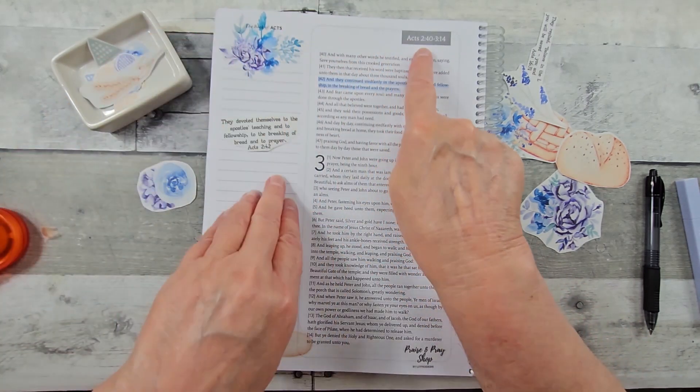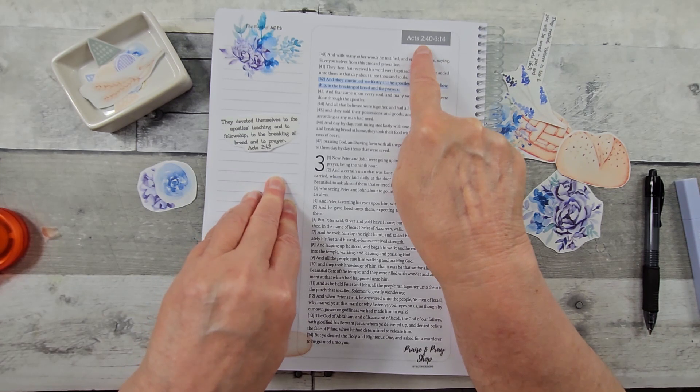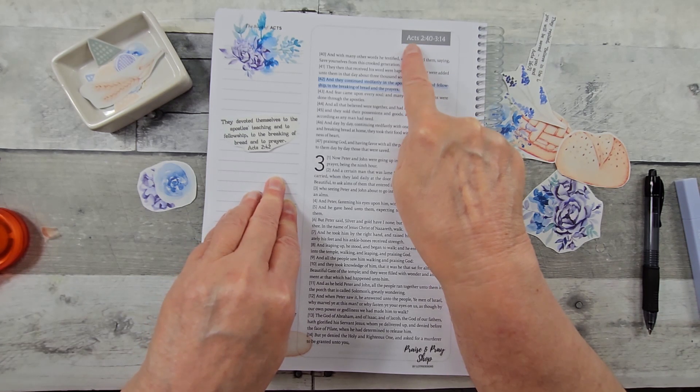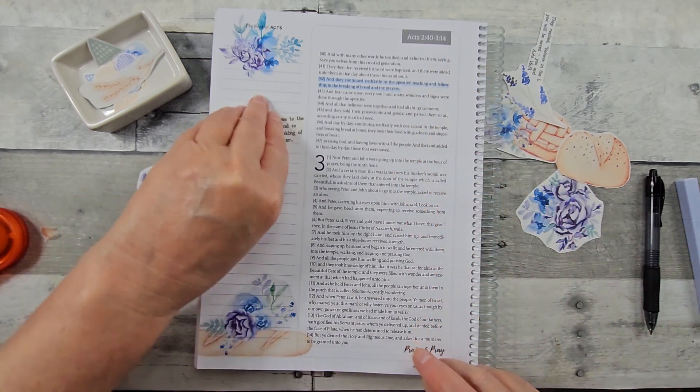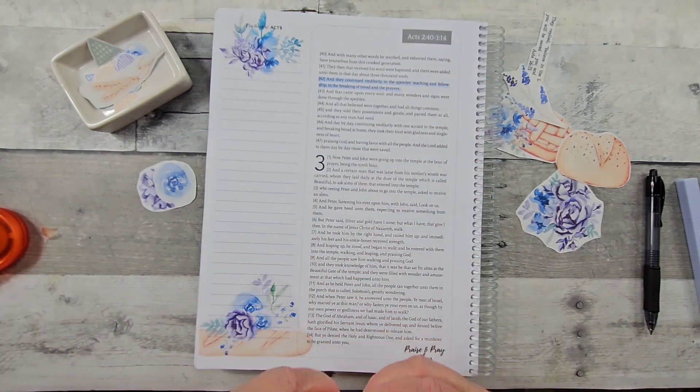So what's nice here, it says Acts and it even tells you Chapter 2, starting at verse 40, and then it ends Chapter 3, verse 14. So I like that you can see that on every page.